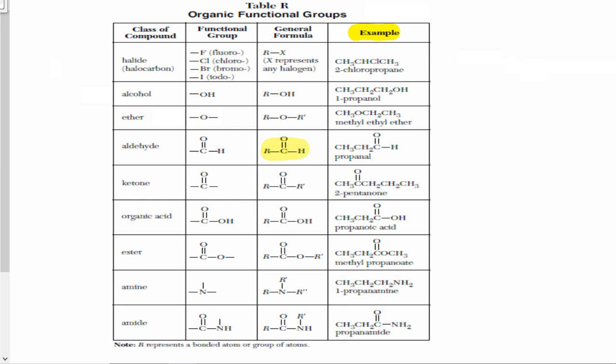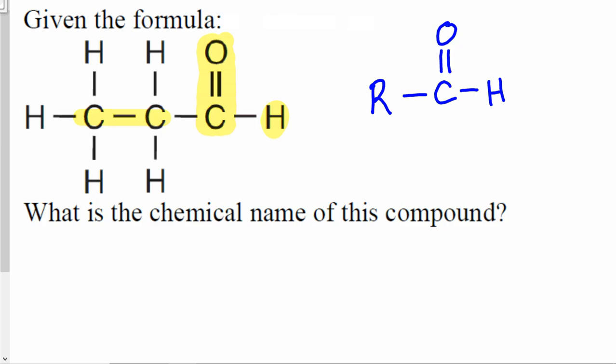If you look at the examples given for aldehyde, they will guide you to name the compound correctly. Anytime you have an aldehyde, the compound name ends with the two letters AL. So in this question, we have to count how many carbons we have first. This is carbon number 1, this is 2, this is 3 — so I have 3 carbons, and therefore the prefix should be prop.